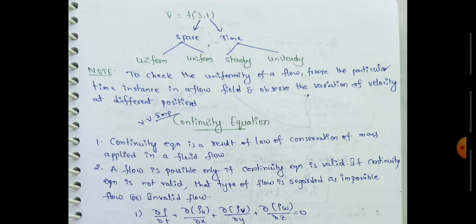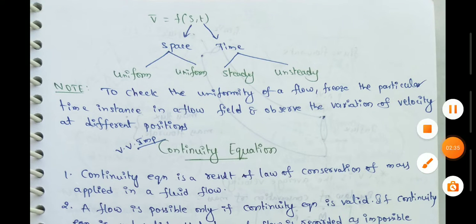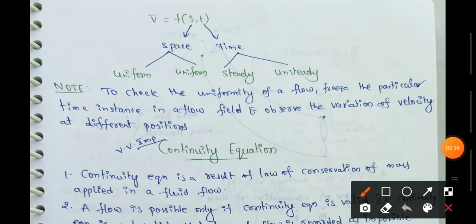At the same time, velocity is a function of space and time. Space gives uniform and non-uniform flow.